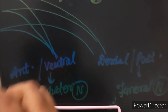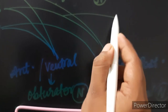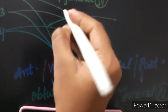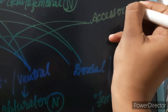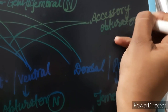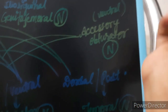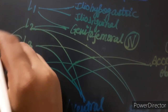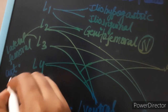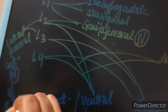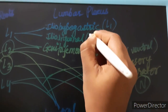The dorsal division of L3 and L4 gives the femoral nerve, while the ventral division of L3 and L4 gives the accessory obturator nerve. From L2 and L3 we get the lateral femoral cutaneous nerve of the thigh. So this covers all the root values of the lumbar plexus.